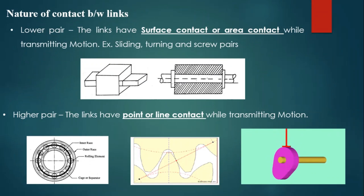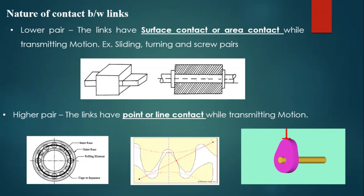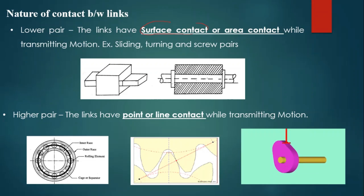The nature of contact between links is divided into two categories: one is lower pair, another one is higher pair. The lower pair means the links have surface contact or area contact while transmitting motion. For example, sliding pair, turning pair, and screw pair are considered as lower pair.